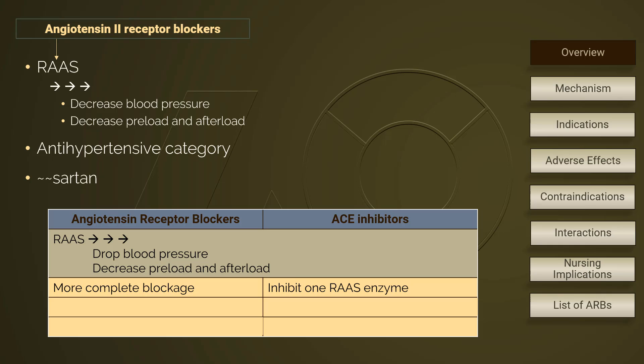On the other hand, angiotensin receptor blockers are more effective in blocking the effects of angiotensin-2, because medications in this group bind to the receptors on the target cells. ACE inhibitors also inhibit kininase, therefore leading to the adverse effect of coughing. ARBs do not interfere with kininase. Lastly, in clinical usage, ARBs are usually prescribed to substitute ACE inhibitors for patients who could not tolerate ACE inhibitors.